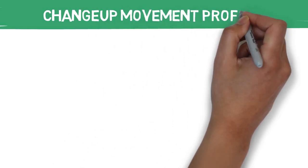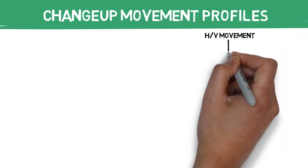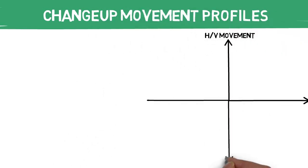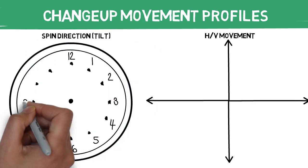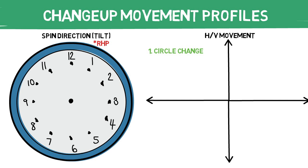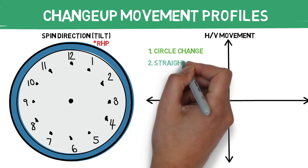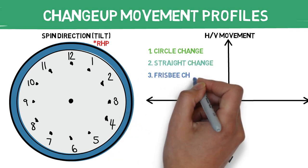Let's look at the changeup's movement profile by mapping out the pitch's normal horizontal and vertical movement patterns, alongside the normal tilt for these pitch variants. We will be looking at a right-handed pitcher — everything can be flipped for lefties. We will start by determining four different types of changeups based on their movement profiles and tilt: the circle change, the straight change, the frisbee change, and the split change.